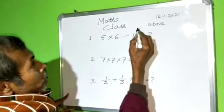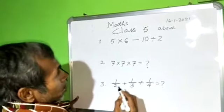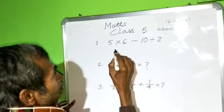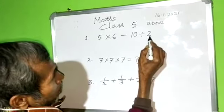Mathematics for class 5 above. Simplify 5 into 6 minus 10 division 2.